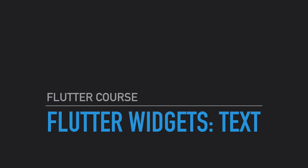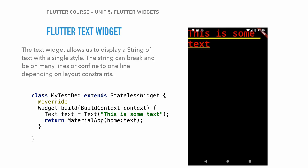Today we're going over the Text widget — a very basic widget we've already seen. There are a few things about the Text widget you may not have known. The Text widget allows us to display a string of text with a single style. The string can break across many lines or be confined to one line depending on layout constraints.